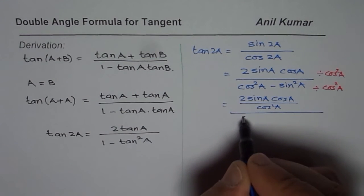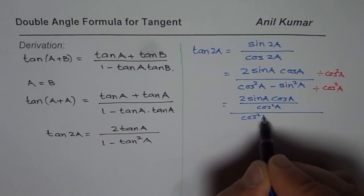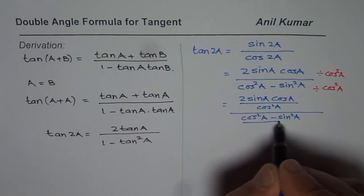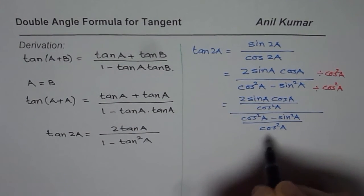And in the denominator we will have cos²(A) - sin²(A) divided by cos²(A).